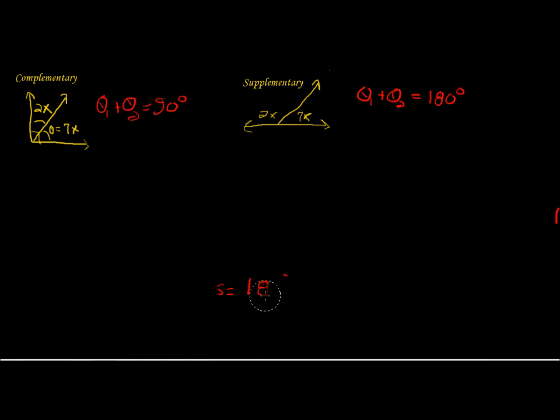So here we have 2x plus 7x, and that's going to equal 90 degrees. 2x plus 7x gives us 9x equals 90 degrees, and our x equals 10.